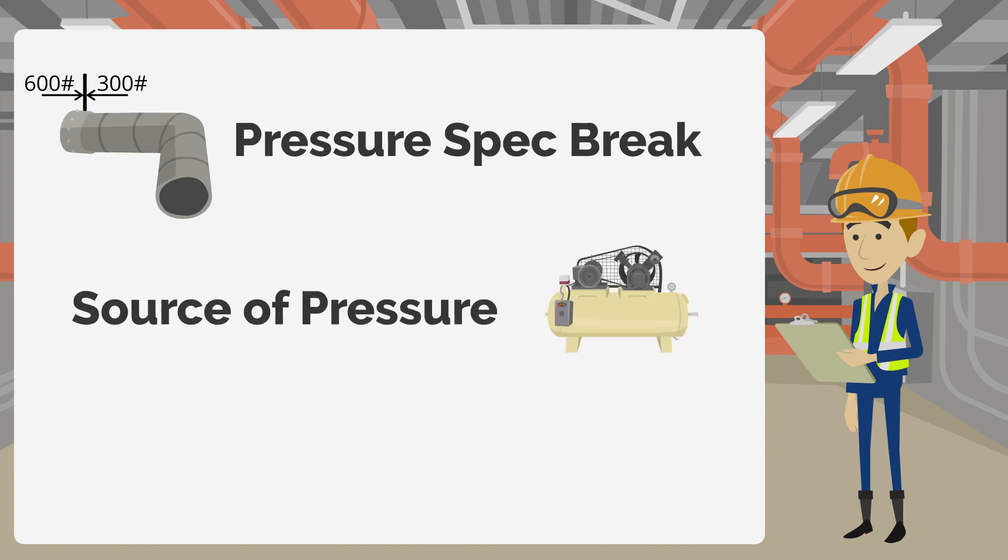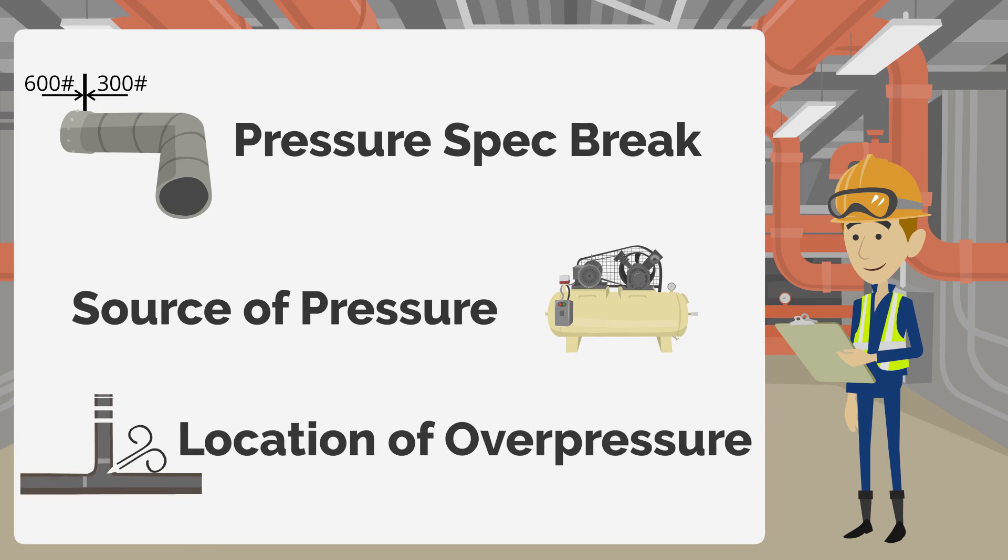identify the source of pressure upstream and the element that is reducing the pressure, which can include PCVs, chokes, and PRVs. And finally, determine the lowest-rated equipment downstream that will overpressure if the pressure-controlling element fails.